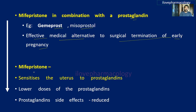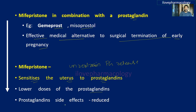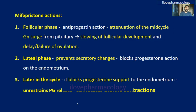When mifepristone is combined with prostaglandins, it sensitizes the uterus to prostaglandins by unrestaining prostaglandin release, thereby stimulating uterine smooth muscle contraction. The dose required for prostaglandins will also be lower, thereby reducing the side effects of prostaglandins.